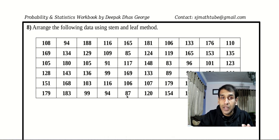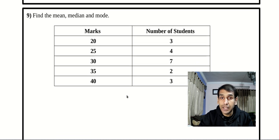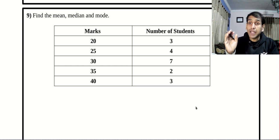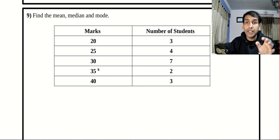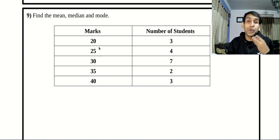In the last lesson we learned about deciles, percentiles and all those things. Today we are going to do the same thing but for type 2 and type 3. Type 2 means it is a frequency distribution. Basically there is no difference between type 1 and type 2 but the way you write.